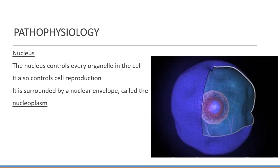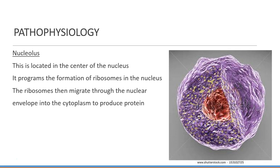The nucleus controls every organelle in the cell and also controls cell reproduction. It's surrounded by a nuclear envelope called the nucleoplasm. The nucleolus is located in the center of the nucleus and programs the formation of ribosomes in the nucleus. The ribosomes then migrate through the nuclear envelope into the cytoplasm to produce protein.